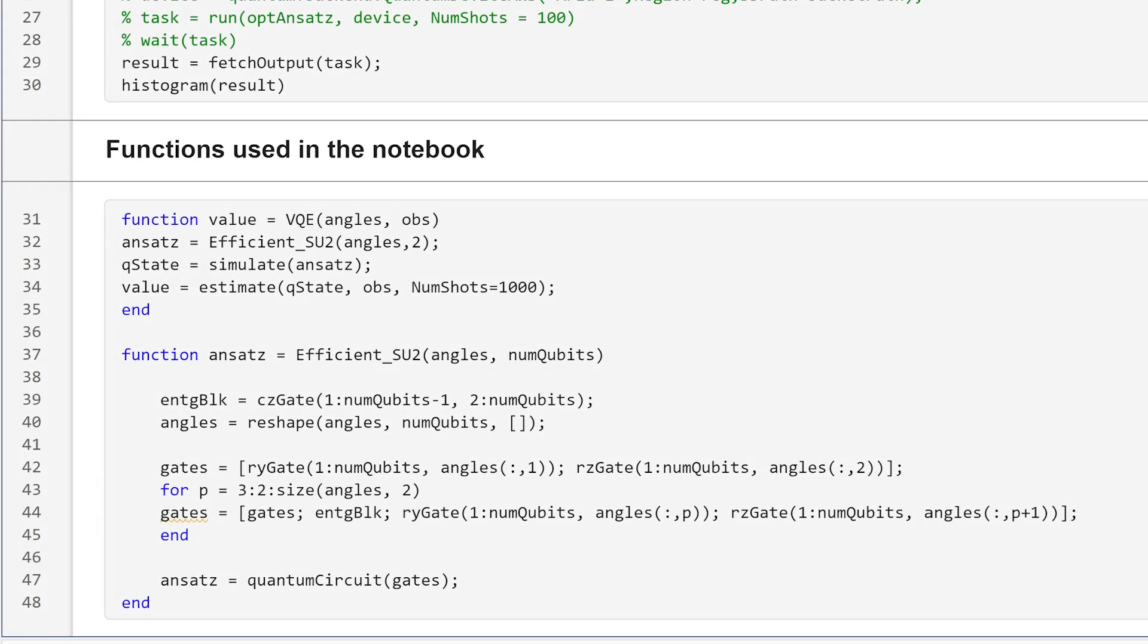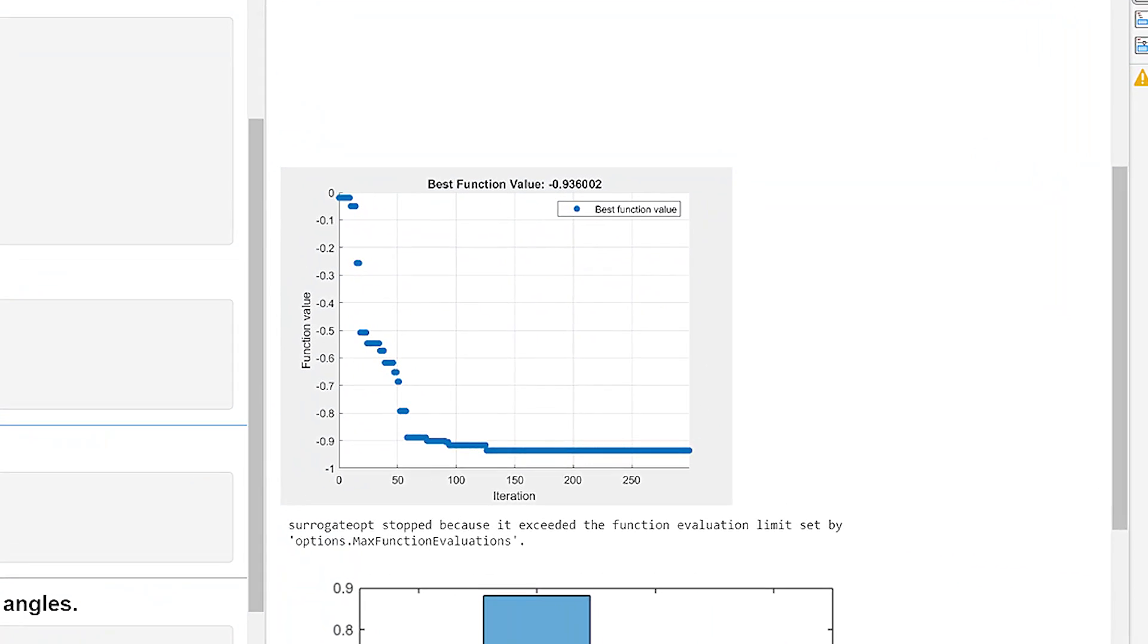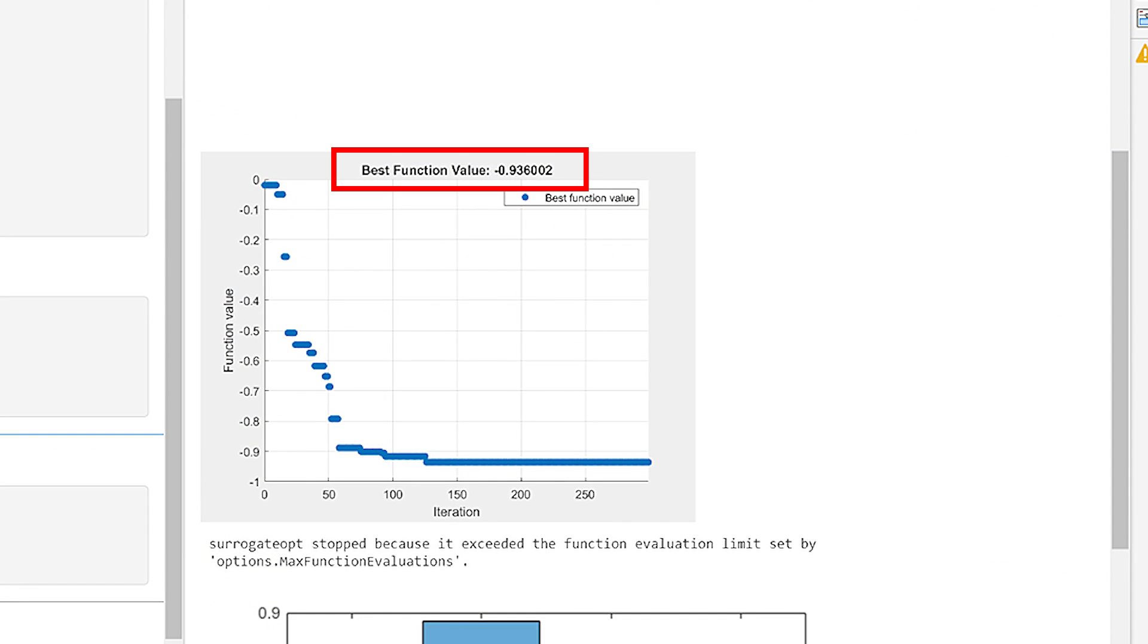Every iteration of the optimizer is going to simulate the circuit with 1000 shots each time. You can see our optimizer converges to a minimum eigenvalue of negative 0.936 which is very close to the classically calculated and expected value of negative 0.9406.